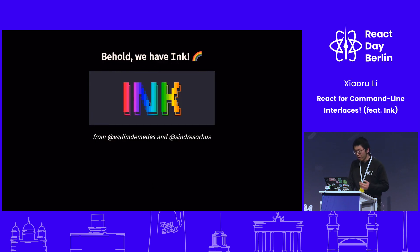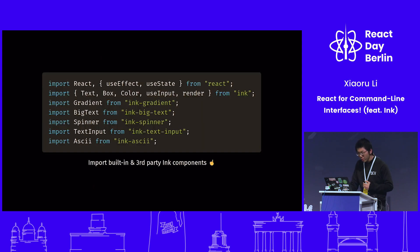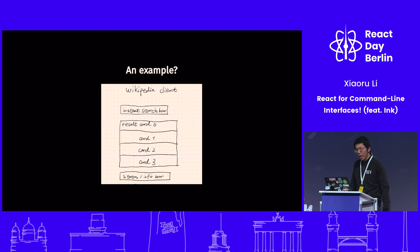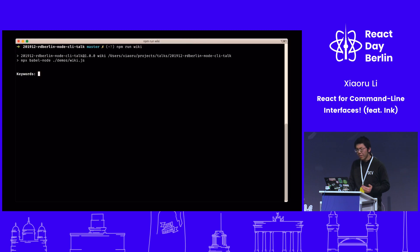This is when we have Ink. Ink is a custom React renderer that renders components through text along with the ANSI escape codes and stuff. It also lets us use Flexbox for the layout. Building an Ink app is basically just like any React app — we import what we need and write custom components. Notice the Box component, which is where we can use Flexbox, kind of like the View in React Native.